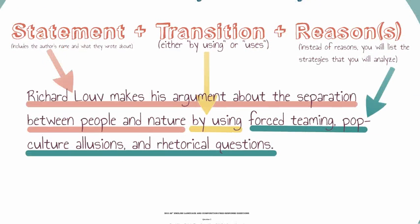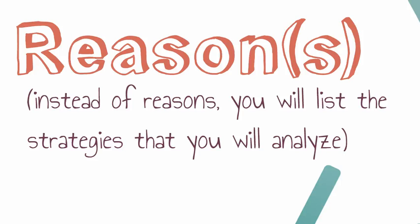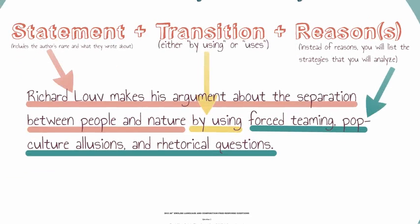So the full thesis would be: 'Richard Louvre makes his argument about the separation between people and nature by using' — and then finally you list your reasons. Instead of reasons like in the other essays, you will actually list the strategies that you're going to analyze. The complete thesis statement is: 'Richard Louvre makes his argument about the separation between people and nature by using force-teaming, pop culture allusions, and rhetorical questions.' That is what a thesis statement looks like for a rhetorical analysis essay.